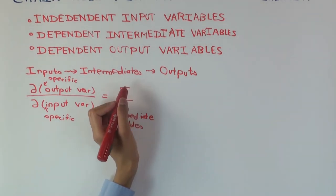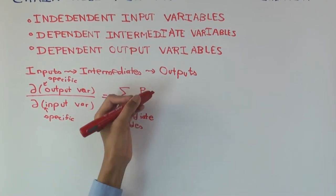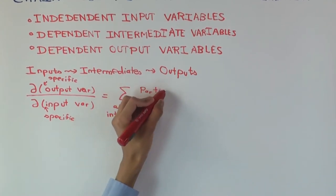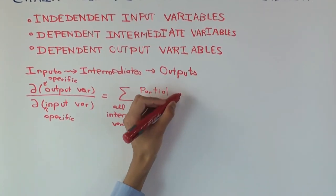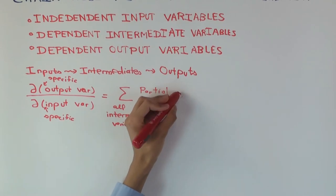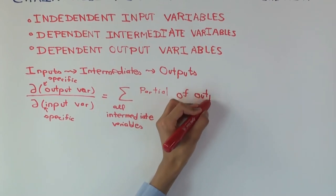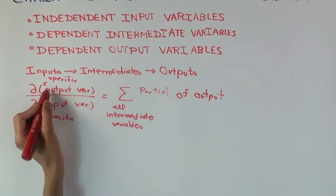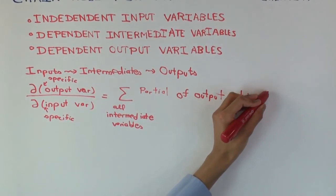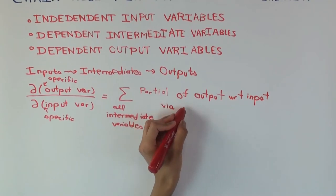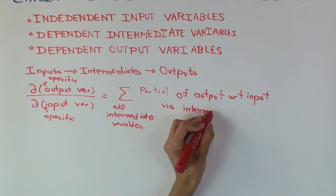I'll write it first more conceptually, and then we'll write the formula. It's the partial of the specific output variable with respect to the input, via the intermediate. So we've chosen an intermediate, and we're computing the partial via that intermediate.